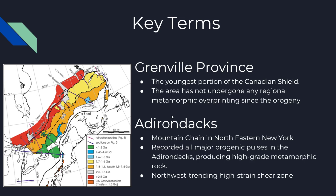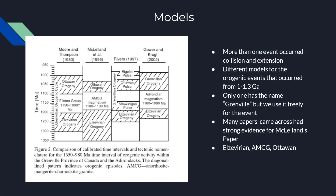The Grenville Province refers to the different lithologies found within the Grenville event rocks. It is the youngest portion of the Canadian Shield and has undergone no overprinting since this last orogeny. The Adirondacks are the mountain chain in the southern area near eastern New York. This area recorded all of the orogenic pulses and also has high-grade metamorphic rocks, with northwest-trending high shear zones allowing for different rock emplacements.